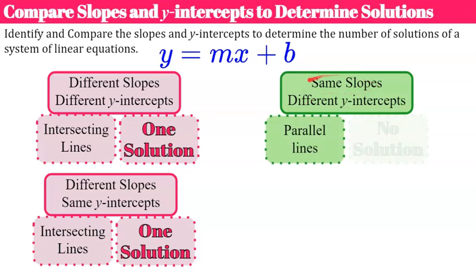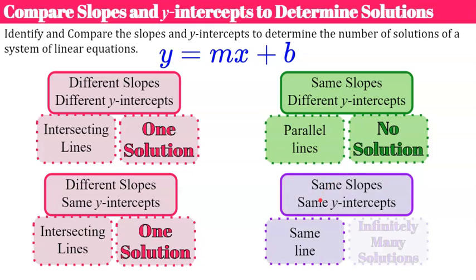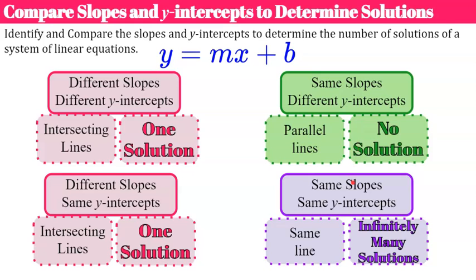When we have the same slope, we get special solutions. Same slope and different y-intercepts means parallel lines — they will never intersect and have no solution. Lines with the same slope and the same y-intercept are the same line and have infinitely many solutions, since all points are in common. So: different slopes — one solution; same slopes with different y-intercepts — no solution; same slope and same y-intercept — infinitely many solutions.